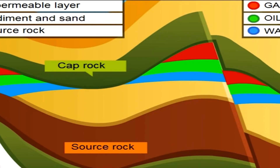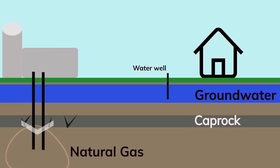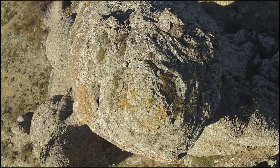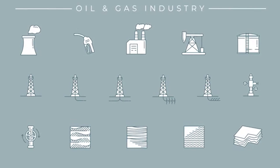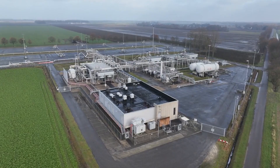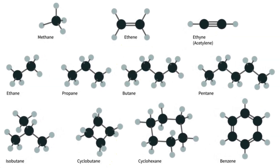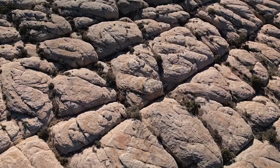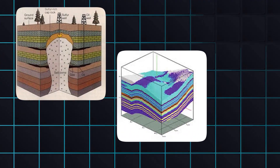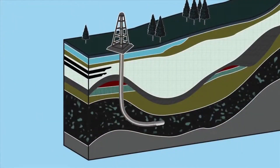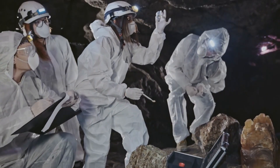Cap rocks are impermeable layers that seal oil and gas within reservoirs, preventing them from escaping to the surface. Common cap rocks include shale, salt, and clay, which have very low permeability. Without cap rocks, hydrocarbons would continue to migrate upward until they reach the surface and disperse. Geological structures such as anticlines, faults, and salt domes often create natural traps where hydrocarbons accumulate. The effectiveness of a cap rock depends on its thickness, composition, and integrity; any fractures or faults can compromise its ability to seal a reservoir, leading to hydrocarbon leakage.